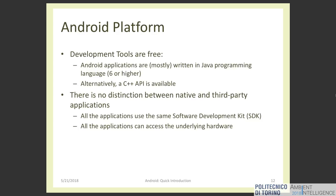Differently from other ecosystems such as iOS, in Android there is no distinction between native and third-party applications — everything is pluggable and customizable. All applications use the same software development kit and can access the underlying hardware, but for accessing the hardware you need user permission. For example, if you want to take a photo from your application, you must ask the user permission to use the camera.